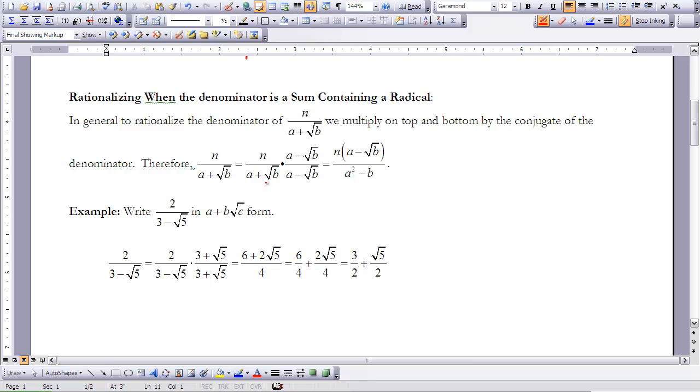we know that this can be a squared, this would be square root of b and a minus square root of b, and then square root of b times the negative square root of b would be just negative b. So we then have no radicals down here anymore, and we have n times a minus the square root of b.